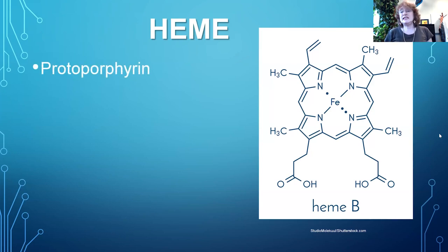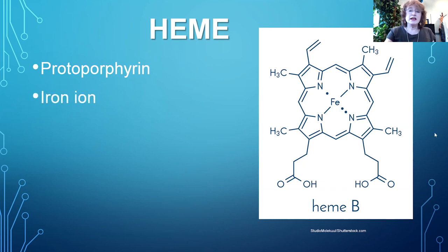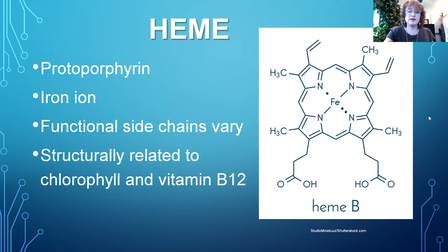The first one we'll explore is heme. Most people know this from the molecule hemoglobin. What we have is what's called a protoporphyrin ring. In the middle of this ring structure, which is planar in its configuration, is an iron ion. It could be ferrous or ferric, depending upon the function of the particular molecule. The functional side groups coming off can vary — this shows heme B, but other types of hemes will have different functional groups at the sides of this molecule.